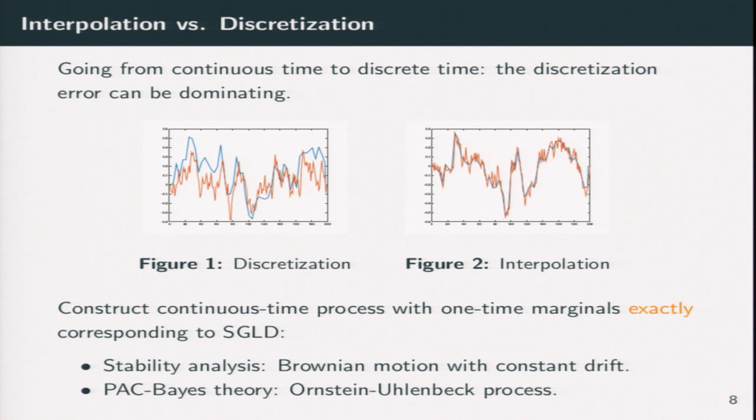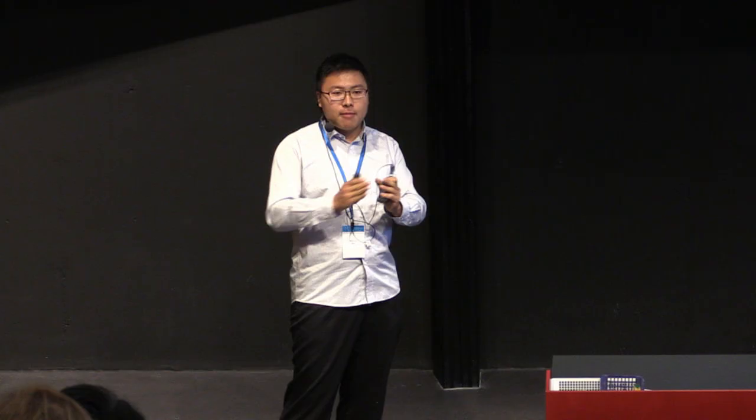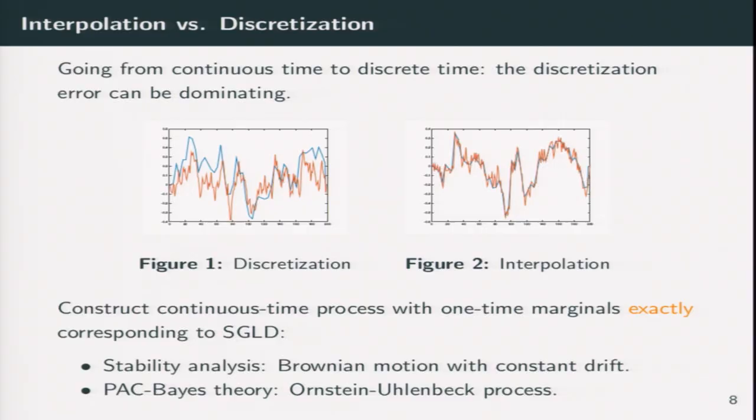And what we do is that we directly construct continuous time process whose one-time marginal diffusion exactly correspond to the discrete time process at your discrete time points. Here are some plots. If you do discretization error, you can see that the error can be large at some point. And if you do interpolation instead of discretization, it looks better. And for stability, we use Brownian motion with drift. And for PAC-Bayes theory, we use Ornstein-Uhlenbeck process.